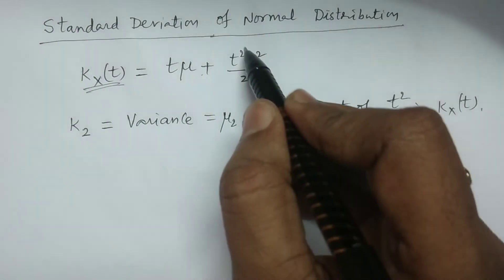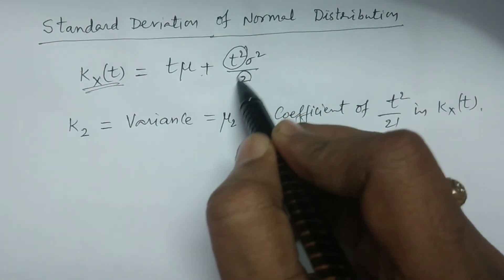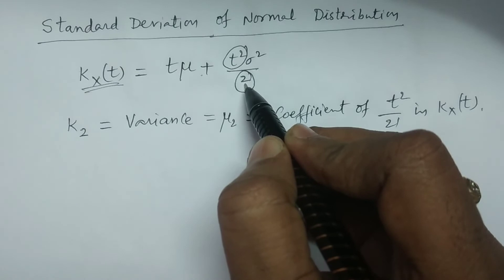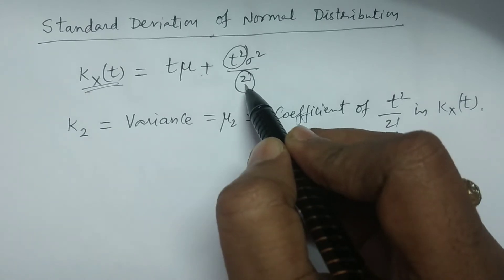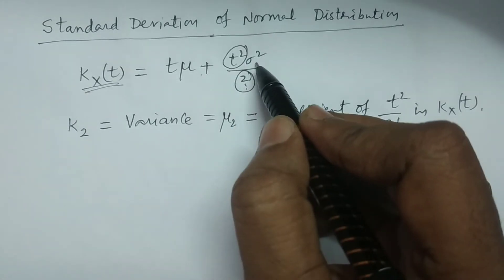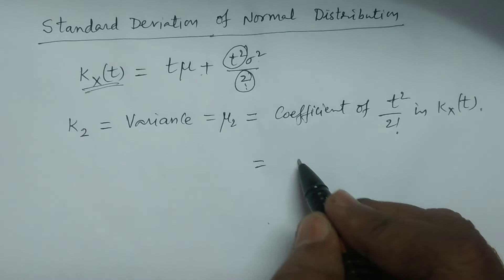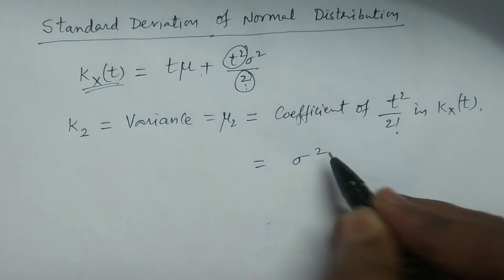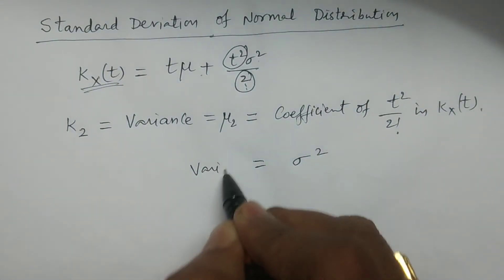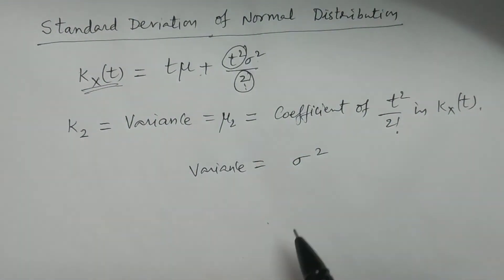In K_X(t), the term t²/2! means t² divided by 2 factorial, which is 2×1. So the coefficient of t²/2 is σ². Therefore σ² is the variance, and the variance of the normal distribution is σ².